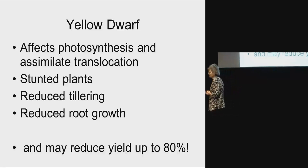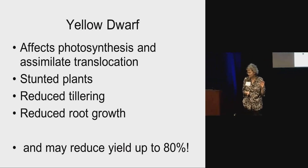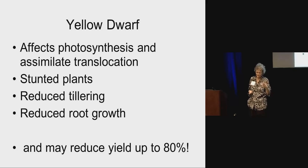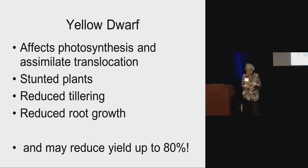What goes on with the yellow dwarf viruses is that infection affects photosynthesis. It messes up how the products of photosynthesis are translocated up and down the phloem. You end up with stunted plants — the tops are stunted, the roots are stunted, which is very critical — meaning reduced tillering, which affects kernel weight and number of kernels. In some cases, if it's bad enough, you can see yield losses of up to 80%. So this thing can be a big problem.